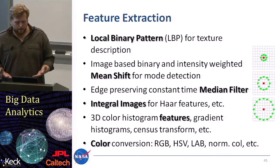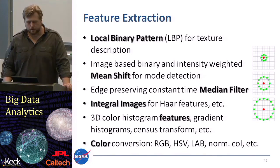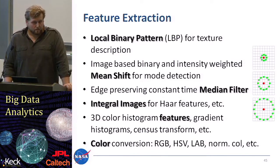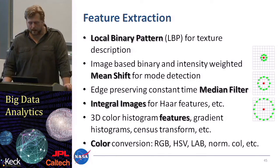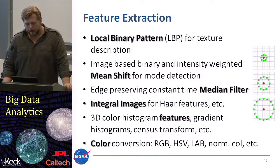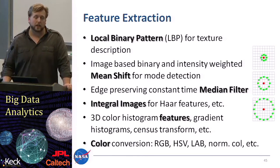From a computer vision standpoint, what we present here is a setup where we do feature extraction. We use something like local binary patterns, which can describe texture around points of interest. We use mean shift procedures to find modes in our accumulated images, then median filters for edge-preserving smoothing, and integral images to very quickly extract features like Haar features. We also use 3D histograms of color if color is present, and other transformation approaches, before going to the machine learning side and using Random Forest to classify objects.